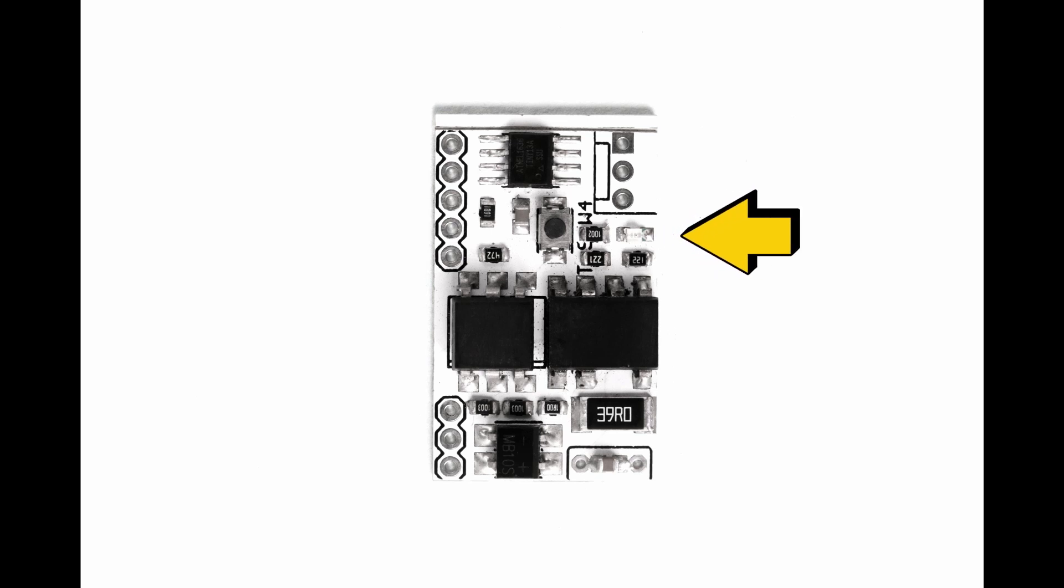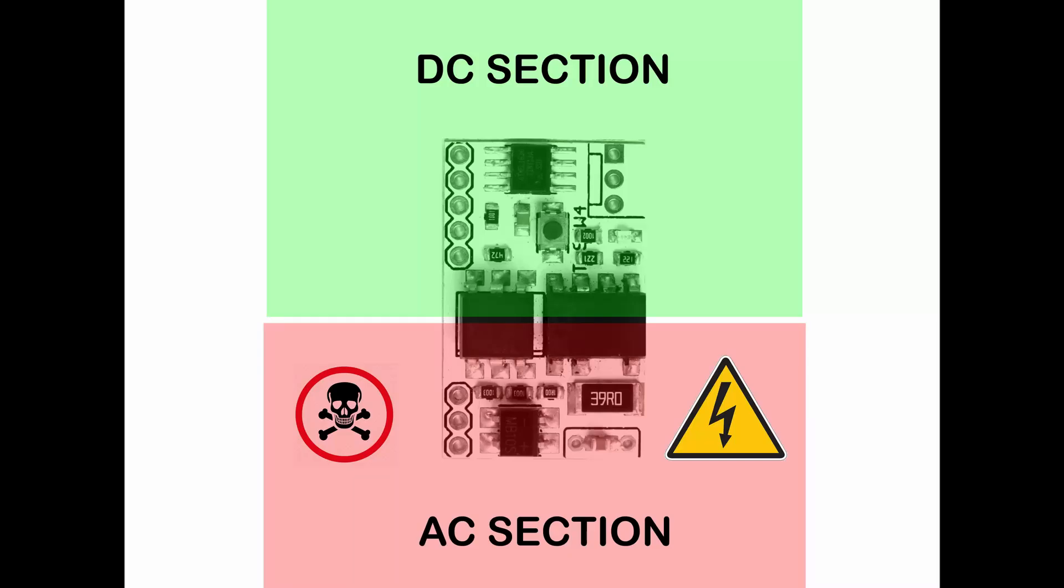A LED is available on the board which glows whenever the value of input control voltage changes and the fan speed or light intensity changes. This module can be considered to consist of two parts. First one is the upper part, the DC part which is the safe side. The other part is the lower side, which is the 230 volt AC mains side which is dangerous to touch if the module is connected with AC supply.